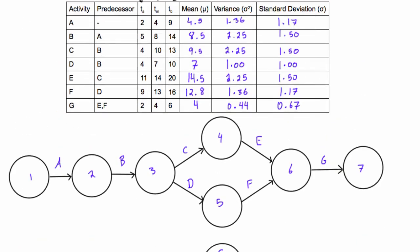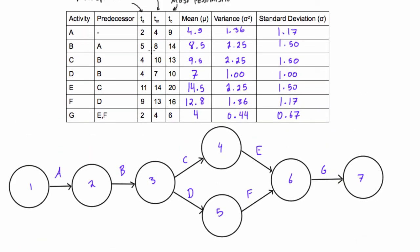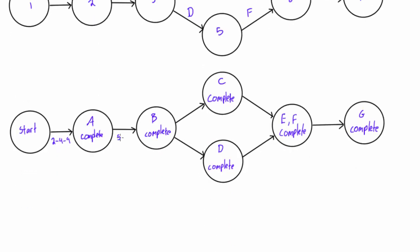Then for activity B, let's take a look. Activity B we had 5, 8, 14. So we'll come down and we will write in 5, 8—I didn't leave myself much room—14. Make sure that's a 14. And then we'll just fill out the rest of the table just like this.